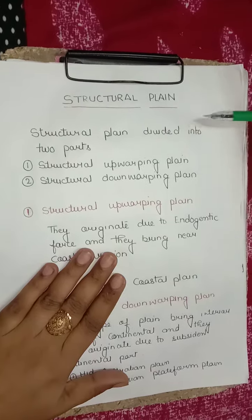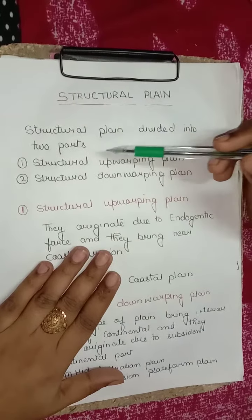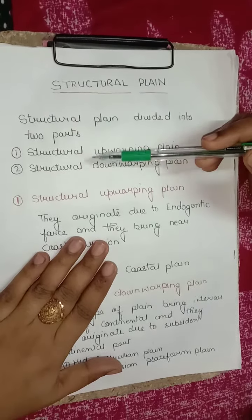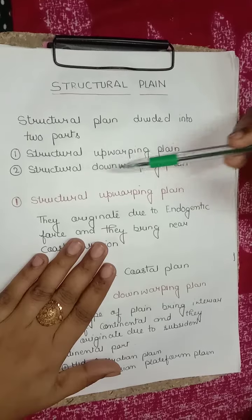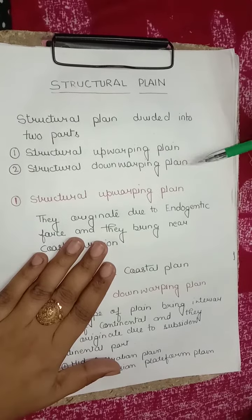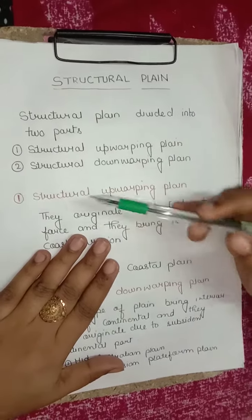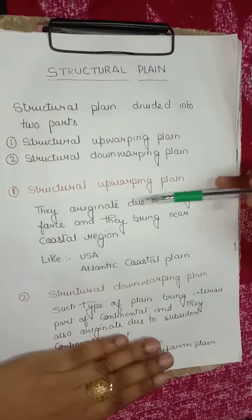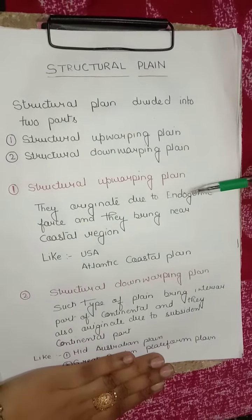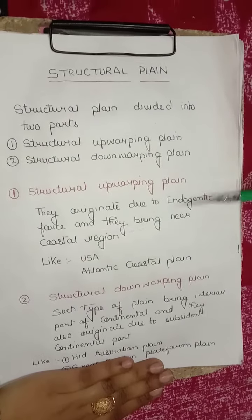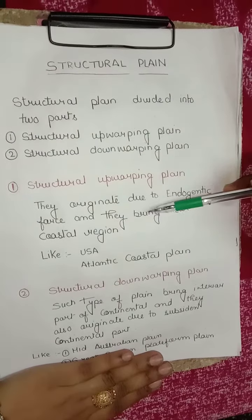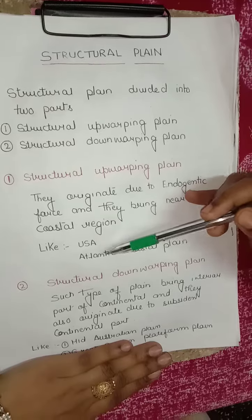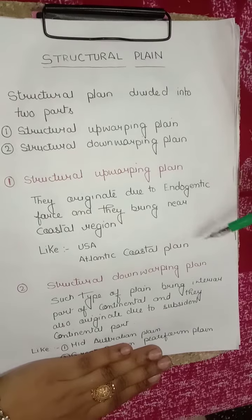Structural plains are divided into two parts. First: structurally upwarping plains. Second: structurally downwarping plains. Structurally upwarping plains originate due to endogenetic forces and they form near coastal regions, like the USA Atlantic coastal plain.